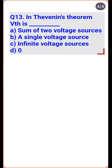Thevenin's theorem states that a combination of voltage source, current source, and resistors is equivalent to a single voltage source and a single series resistor — so option B is the right one.